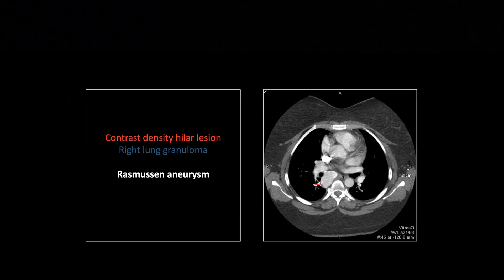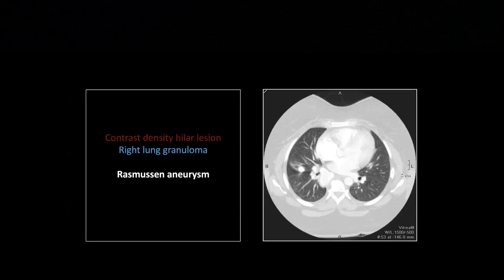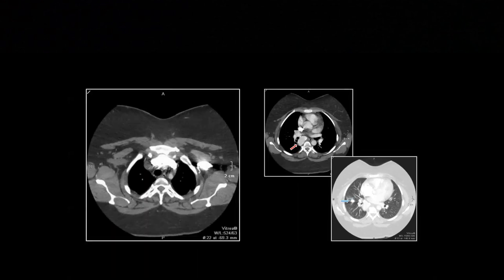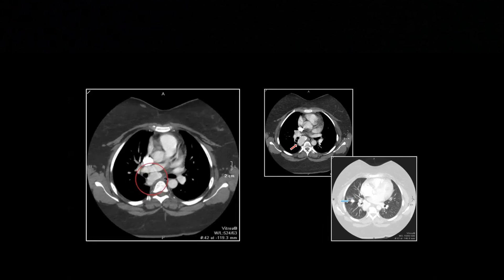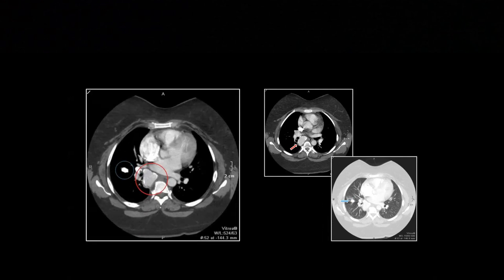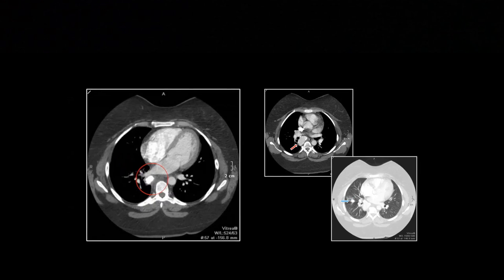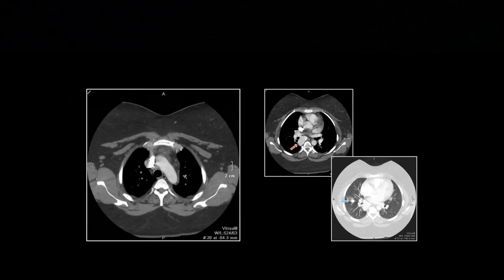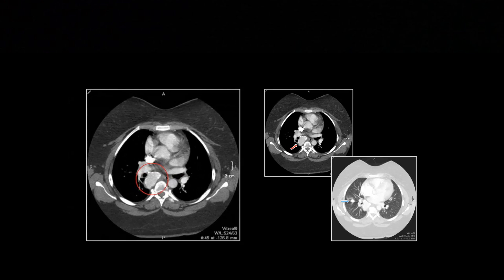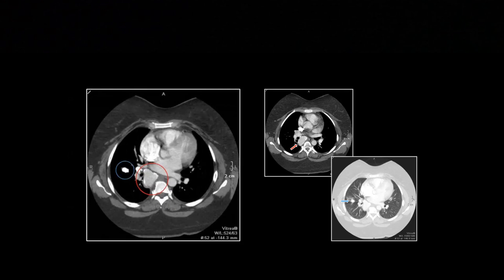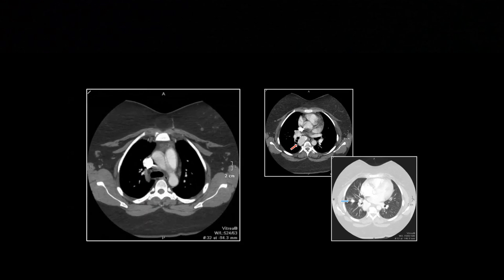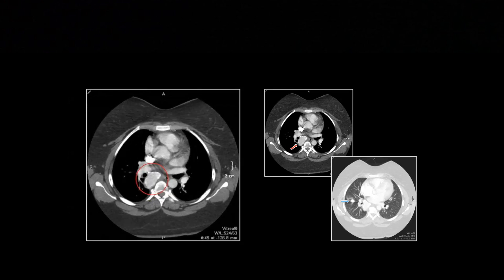This one was made a little easier because there is a dense calcification here, typical of a Ranke complex. There are hilar calcifications as well. So previous exposure to tuberculosis plus this finding, this peripherally calcified collection of contrast, that spells Rasmussen aneurysm, which is specifically a pulmonary artery aneurysm arising from tuberculosis infection.